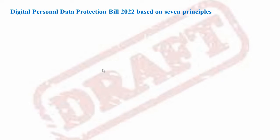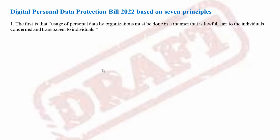The Digital Personal Data Protection Bill 2022 is based on 7 principles. The first is that usage of personal data by organizations must be done in a manner that is lawful, fair to the individual concerned, and transparent to individuals.